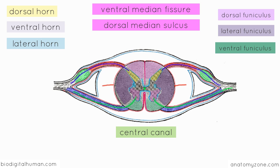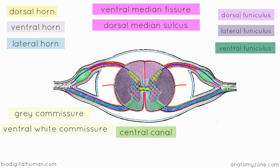One final thing to point out: where fibres cross over from one half of the spinal cord to the other, you've got something called a commissure. Within the grey matter, you've got the grey commissure, which I'm shading in yellow. And then anterior to that, you've got a little bit of white matter called the ventral white commissure, where fibres cross from one side to the other. Those are some of the basic internal features of the spinal cord.